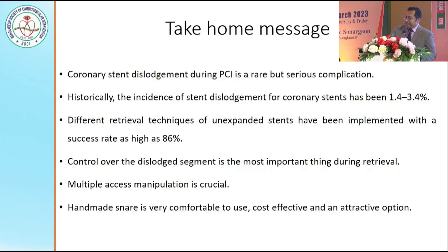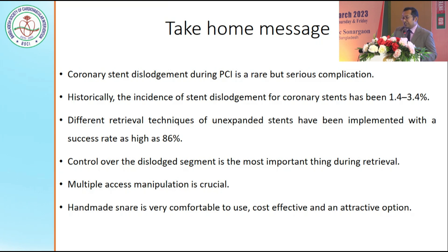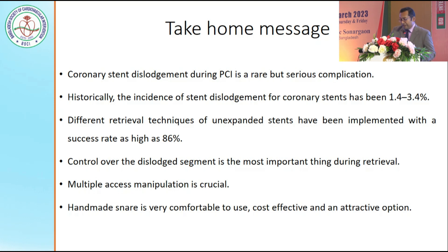Our take-home message: coronary stent dislodgement during PCI is a very rare but serious complication, with an incidence of about 1.4 to 3.4 percent. Maintaining control over the dislodged segment is the most important thing during retrieval — throughout our case the stent was in our control, but we failed to expel it. Multiple access manipulation is crucial, as with multiple access routes one can attempt several techniques. A handmade snare is very easy to use, cost-effective, and an attractive option in this situation.